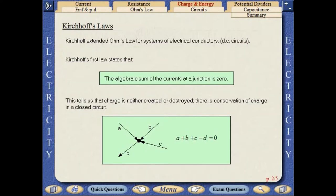Kirchhoff extended Ohm's law for systems of electrical conductors. Kirchhoff's first law states that the algebraic sum of the currents at a junction is zero. This tells us that charge is neither created or destroyed. There is conservation of charge in a closed circuit.